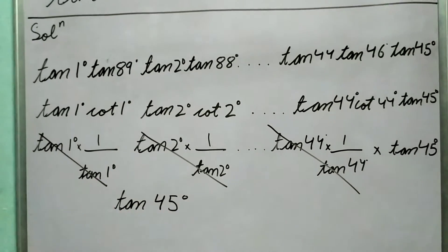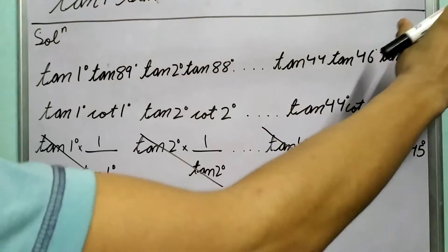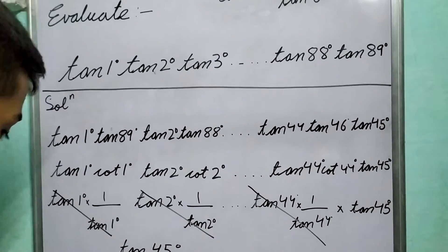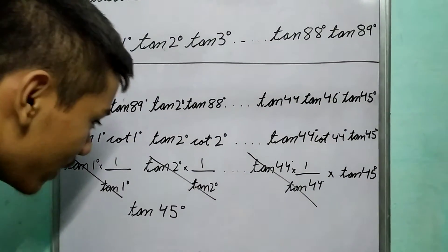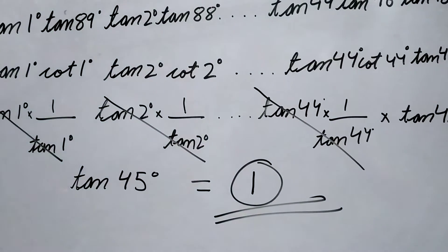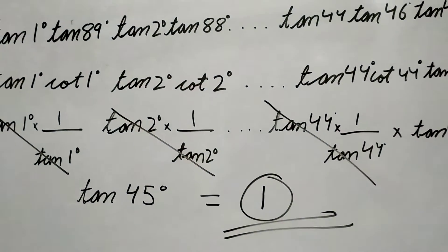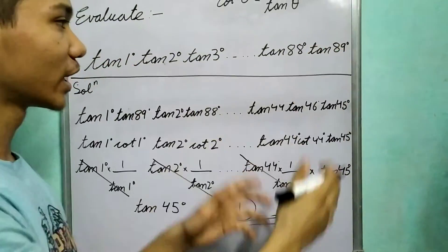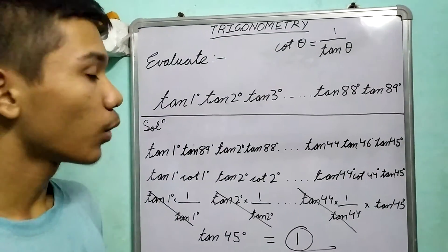Now we know the value of tan 45°, right? Tan 45° is nothing but 1. So this entire long complex-looking expression will boil down to tan 45° and equal to 1.